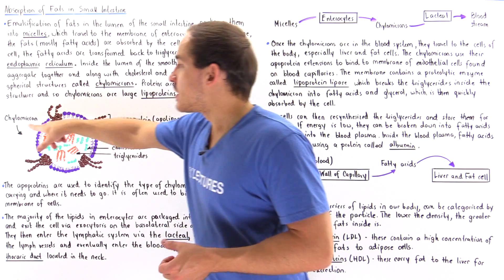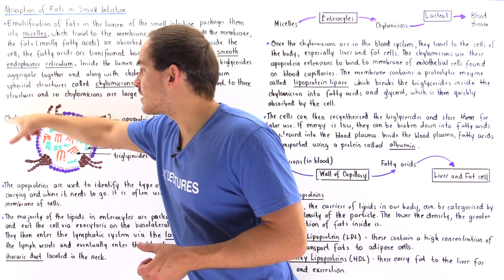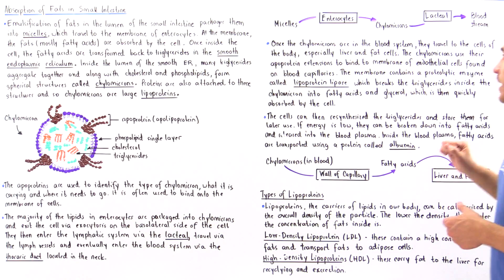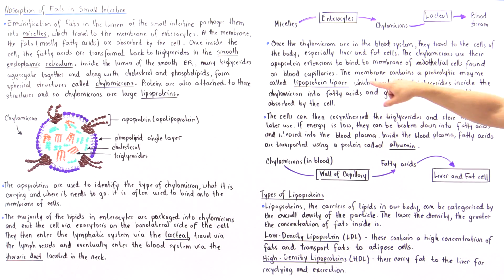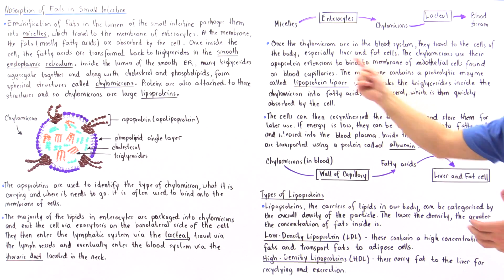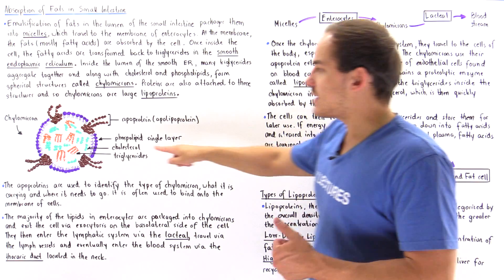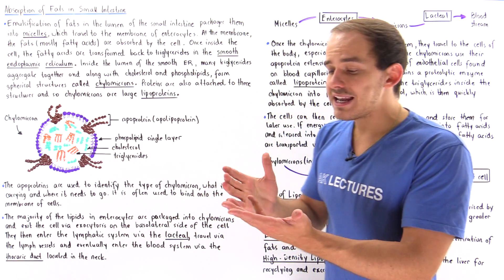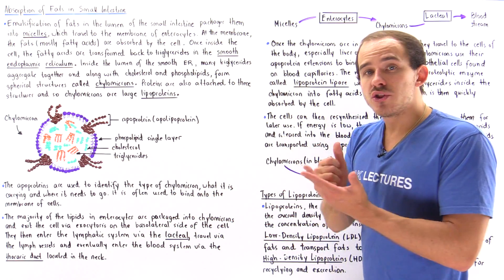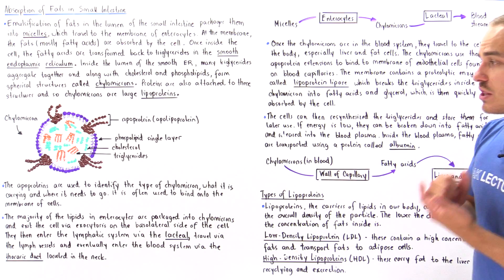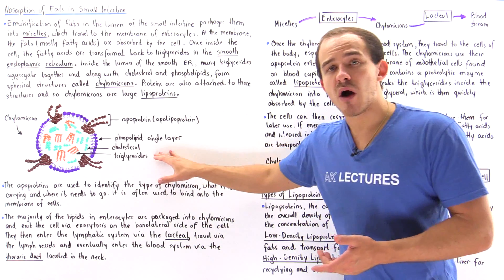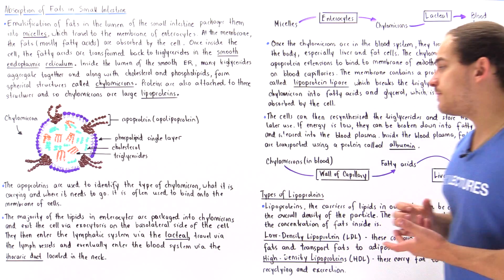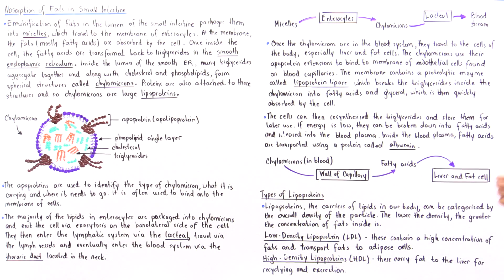Once the chylomicron is on the membrane of these endothelial cells, the lipoprotein lipase breaks down the triglycerides, and those fatty acids, glycerol molecules, and cholesterol molecules can then easily diffuse into the target cell of the liver or fat cell.